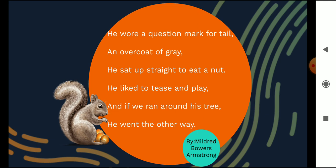I am going to read the poem now. He wore a question mark for tail, an overcoat of grey. He sat up straight to eat a nut, he liked to tease and play. And if he ran around his tree, he went the other way.